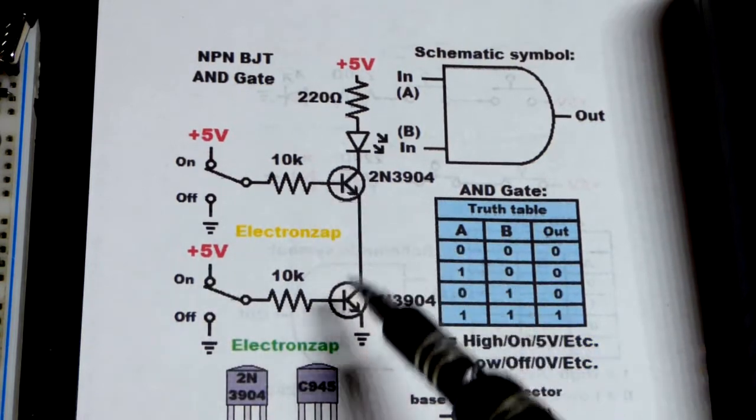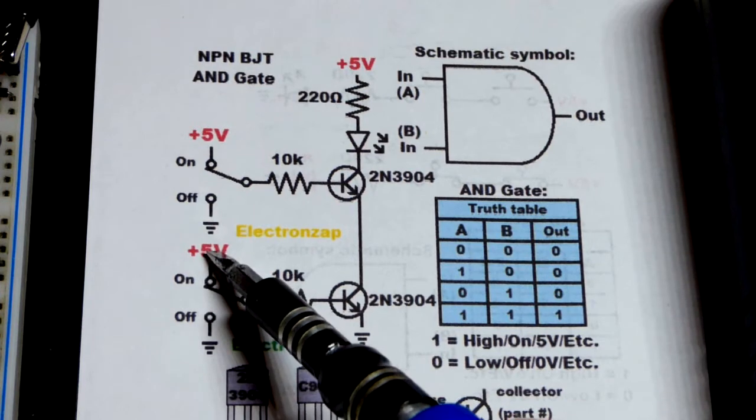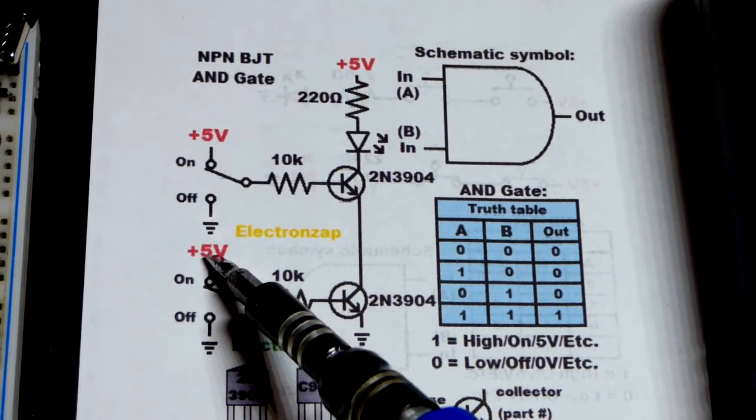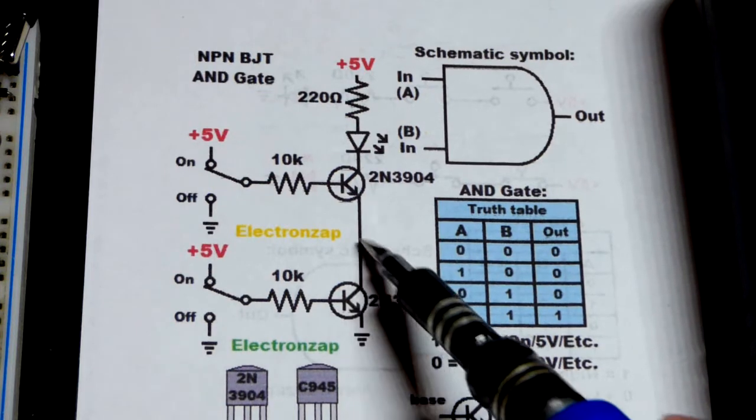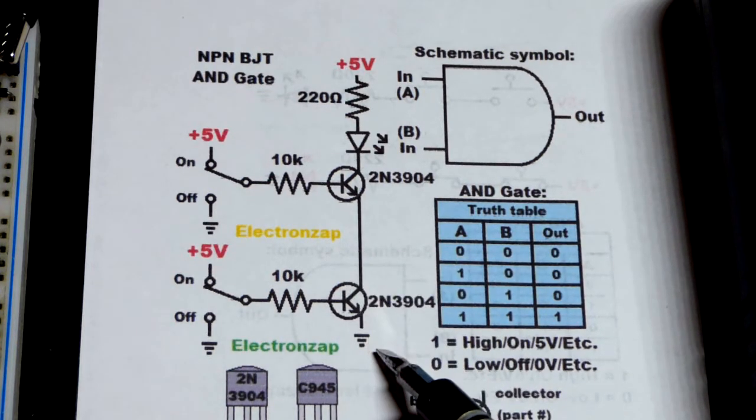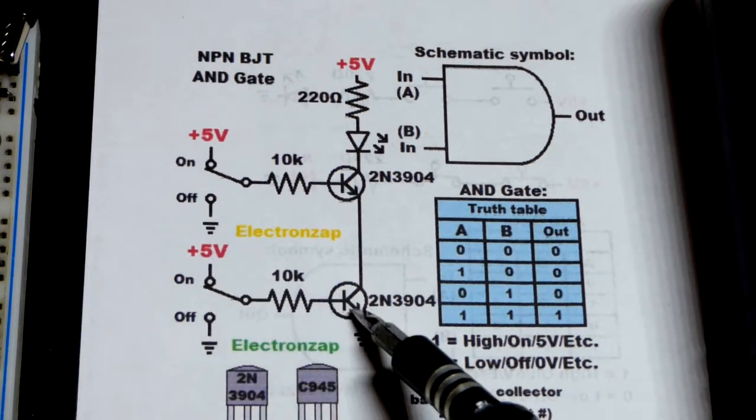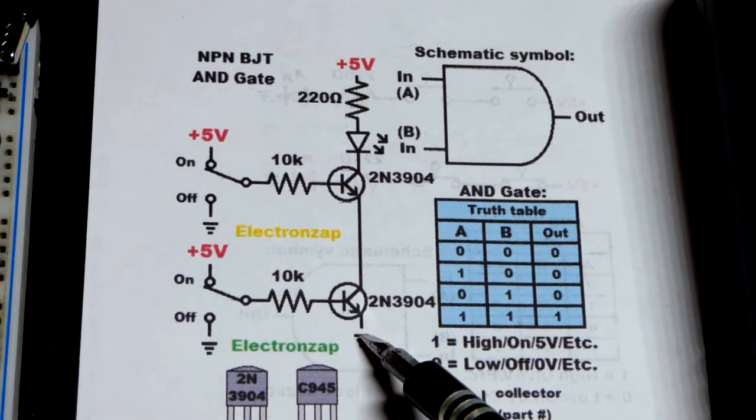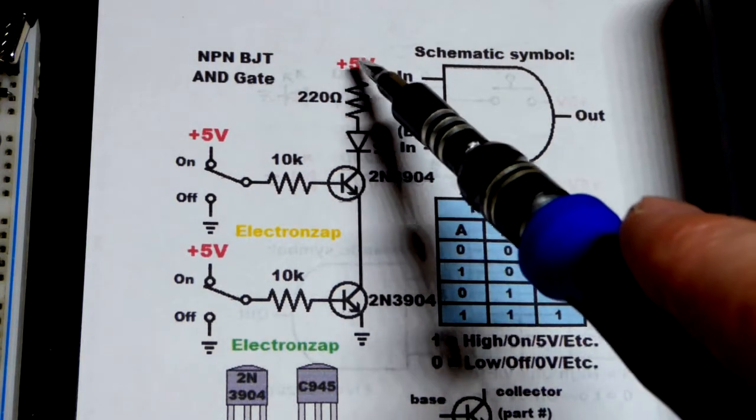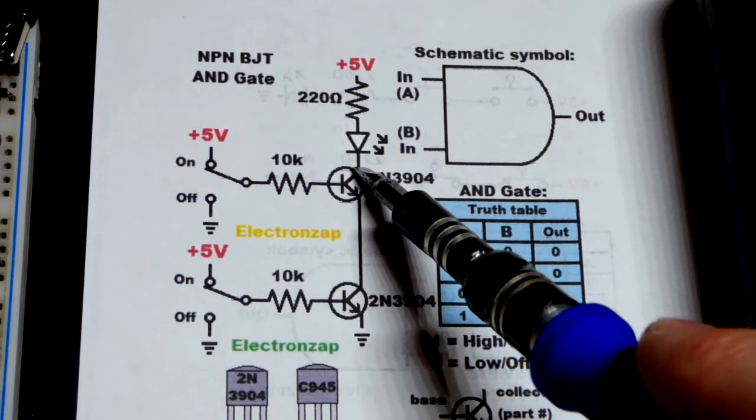Since they're NPN bipolar junction transistors we need to make the base positive enough. Ultimately we've got to put some current through base to emitter and it's going to let a lot of current go from collector to emitter. If we put five volts through a 10,000 ohm resistor we'll get plenty of base to emitter current to allow the current going through a 220 ohm resistor protecting an LED.